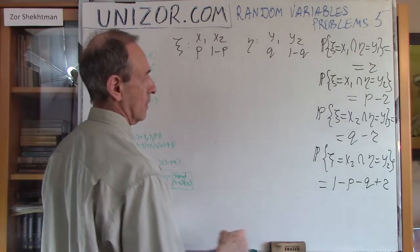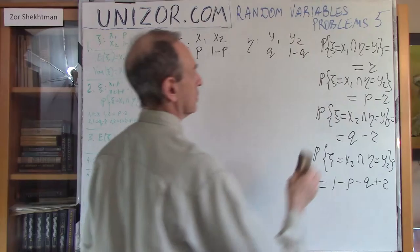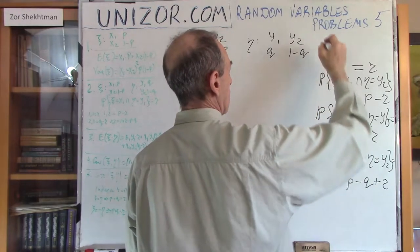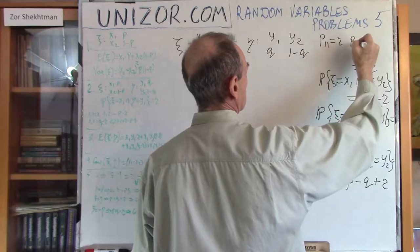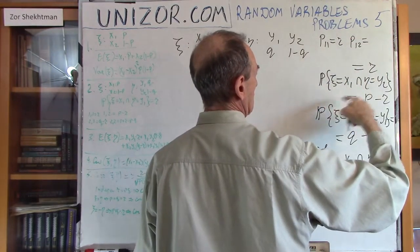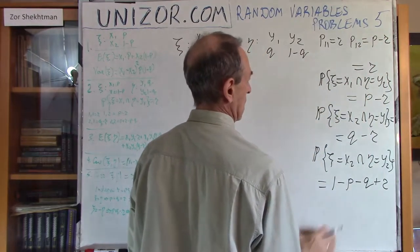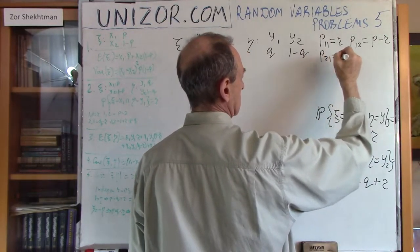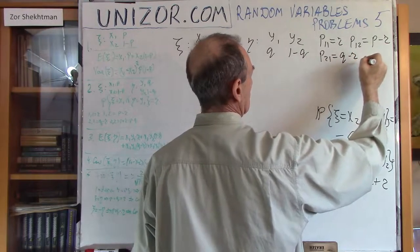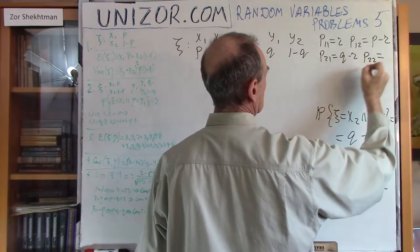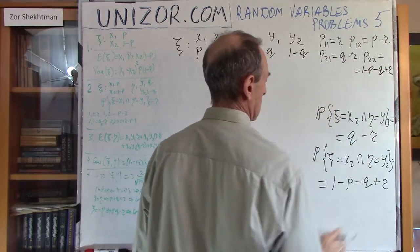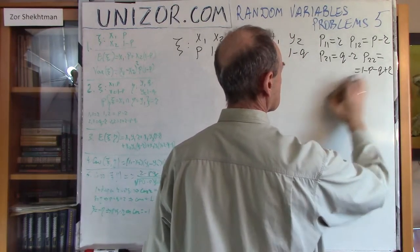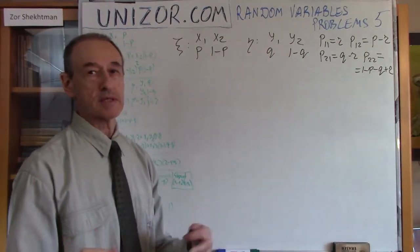Let me write it a little more compactly. p11 equals r; p12 equals p minus r; p21 equals q minus r; and p22 equals 1 minus p minus q plus r. Those are all the combined probabilities, and now we have enough information to calculate the covariance.